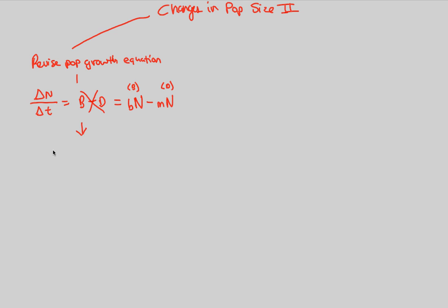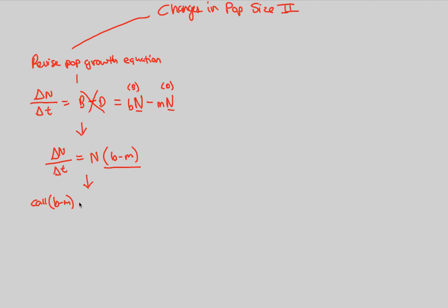Now I'll do some simplification. Looking at delta N over delta T, I can see a common factor N. Taking out that common factor gives us N multiplied by (b minus m). Don't worry if you got lost — just understand that we arrive at a simplified equation: population size N multiplied by the per capita birth rate minus the per capita death rate. And I'm going to call this b minus m something different.